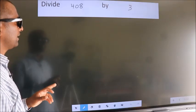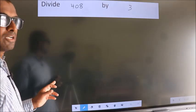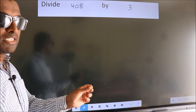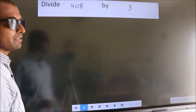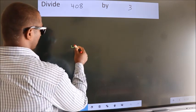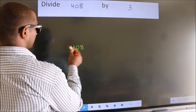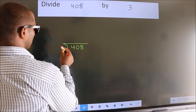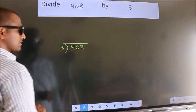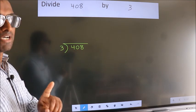Divide 408 by 3. To do this division, we should frame it in this way. 408 here, 3 here. This is your step 1.